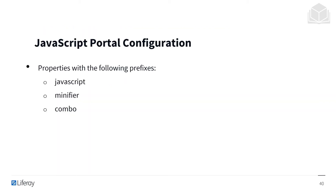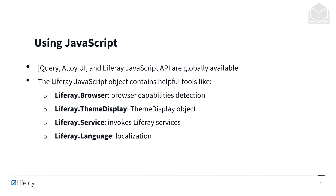When configuring the JavaScript portal properties, you'll be looking for properties with the following prefixes: JavaScript, minifier, and combo.